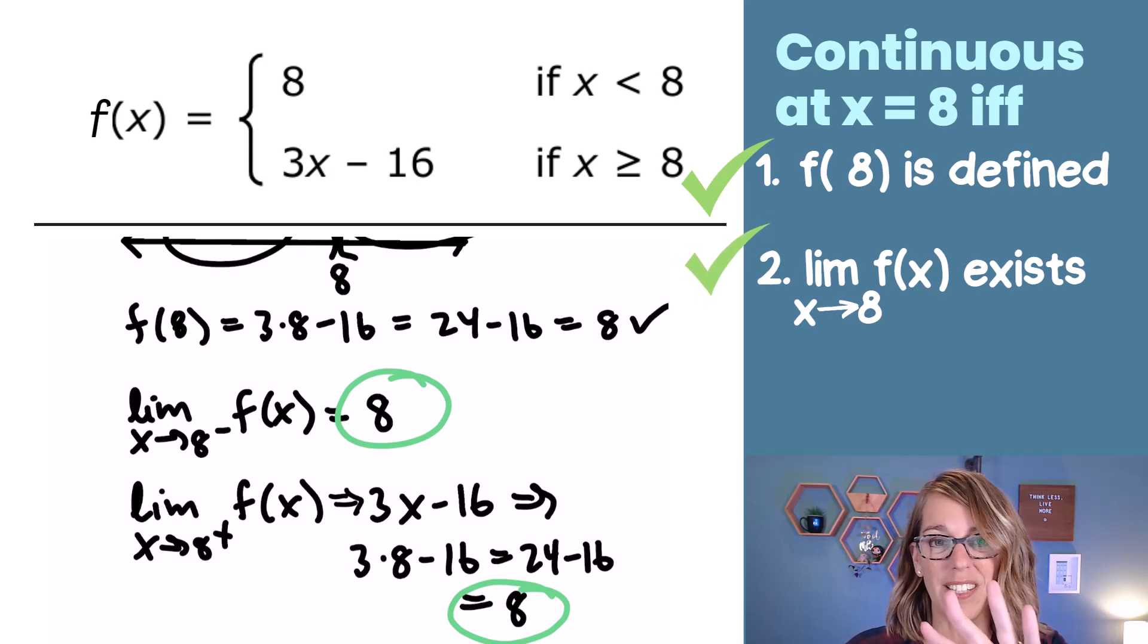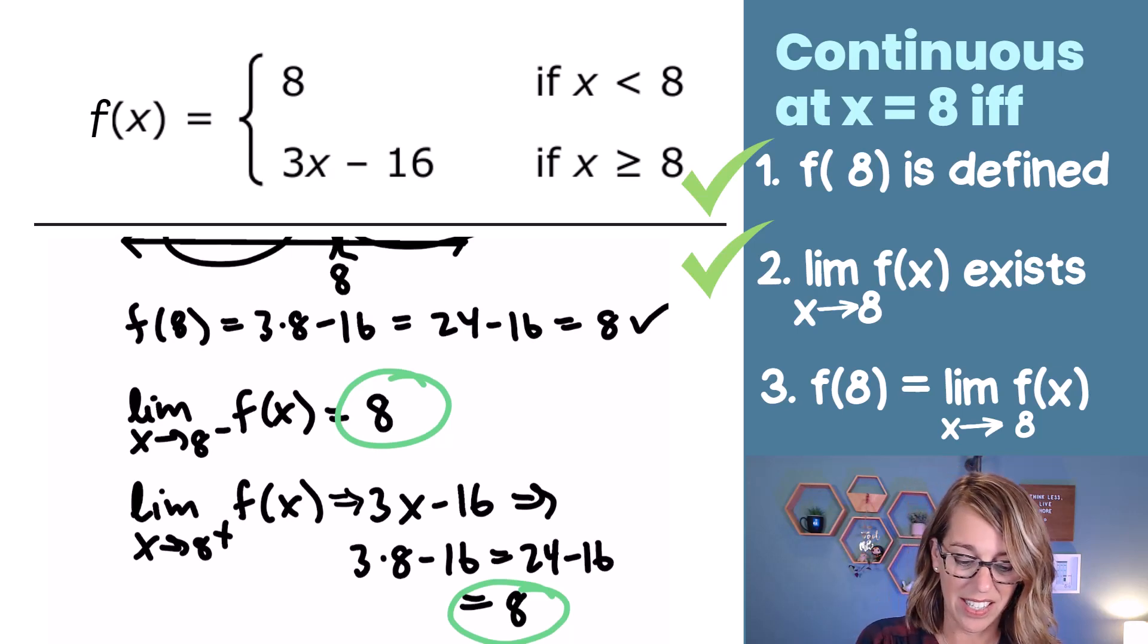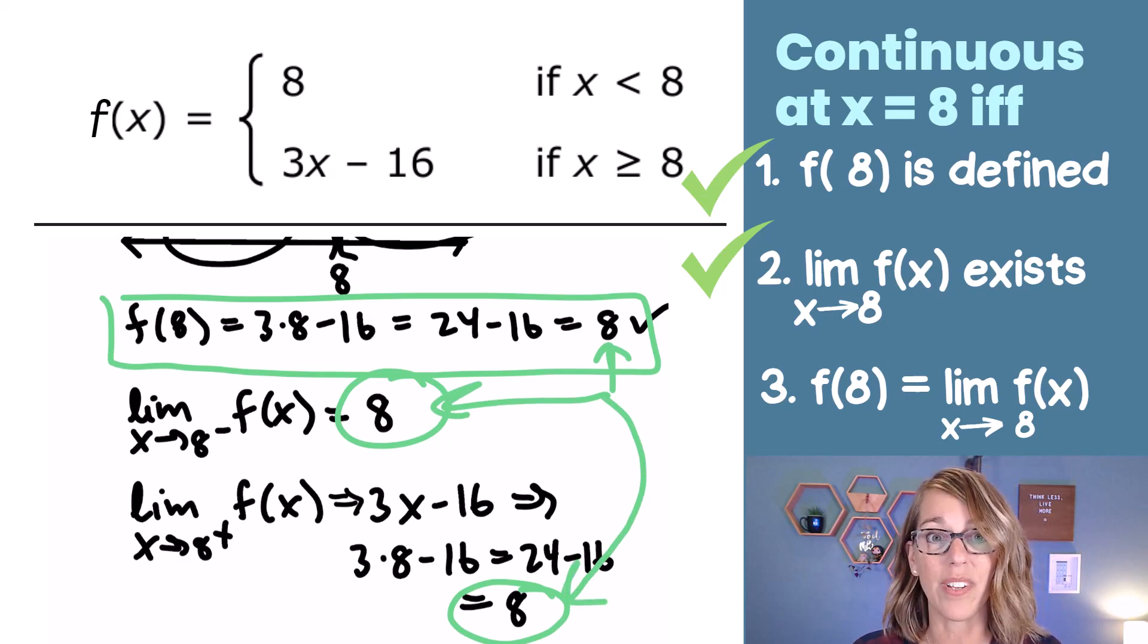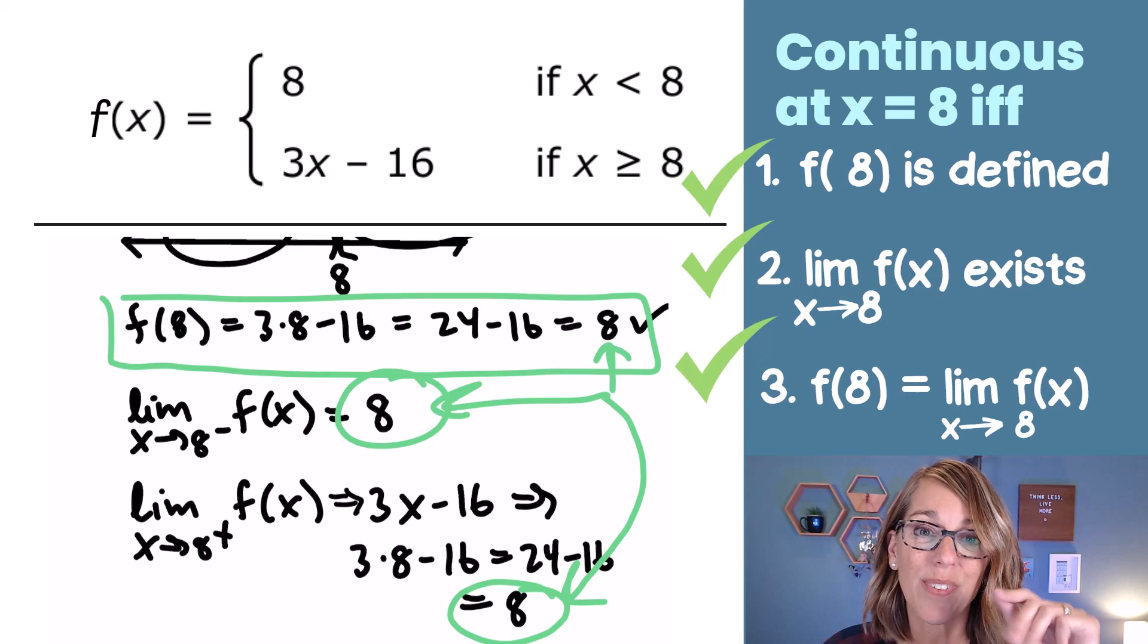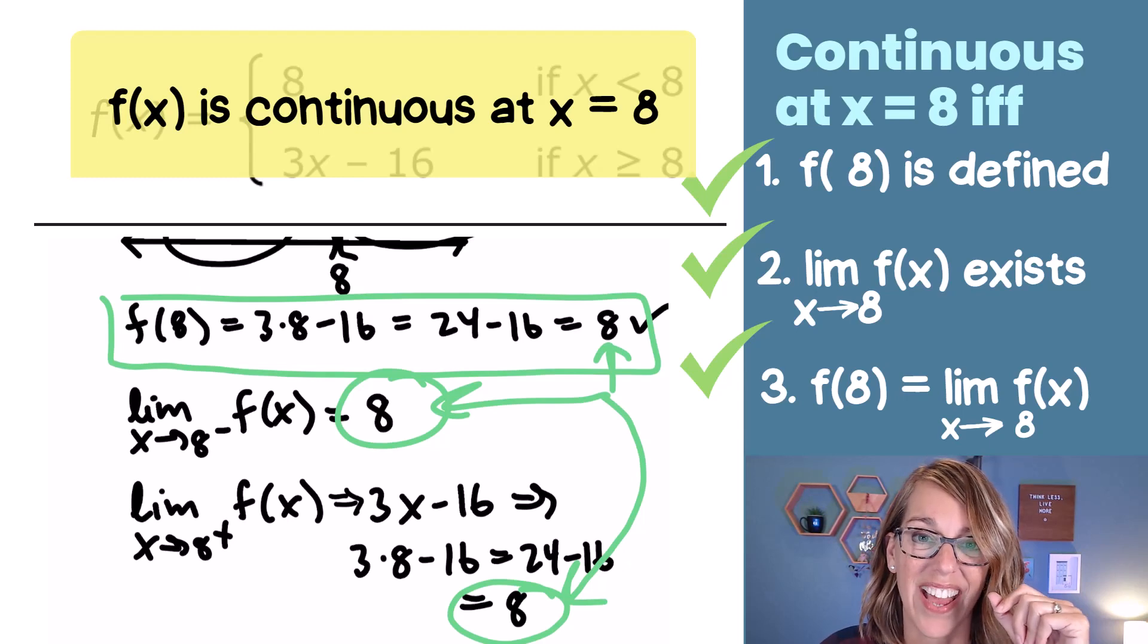Now, finally, and you might already see that we've satisfied this last one, I need the function value at 8, here it is right here, this one equals 8, to be the same as the limit. Well, we saw that that limit existed, and it was equal to 8. So we've satisfied all three of our conditions, and we can conclude that this function is, in fact, continuous at 8.